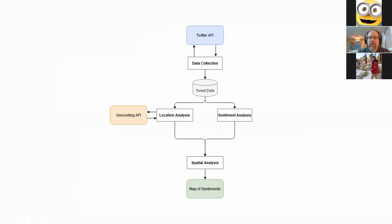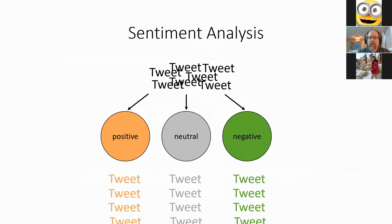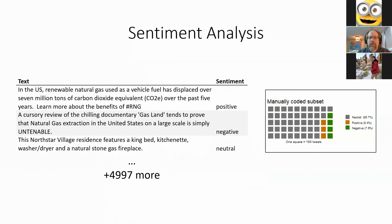At this point each tweet has a latitude and longitude, and we move to sentiment analysis — figuring out what these tweets are actually saying about natural gas. The goal is to classify tweets into three categories: positive, neutral, and negative. This is done in two steps: first, manual classification to create training data, then using that data to train machine learning algorithms to automate the process for the remaining tweets.